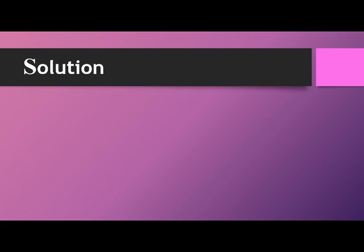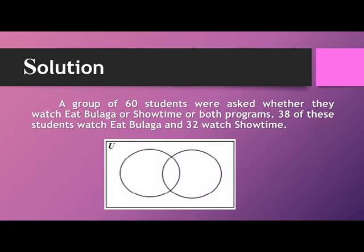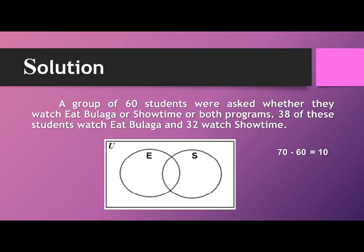For our solution, we will use a Venn diagram. Let us name the first set as E for It's Bulaga and S for Showtime. First, let's add those students who watch It's Bulaga and those who watch Showtime: thirty-eight plus thirty-two equals seventy. Then subtract sixty from seventy, because there are sixty students in the set. Seventy minus sixty equals ten. So there are ten students who watch both It's Bulaga and Showtime.